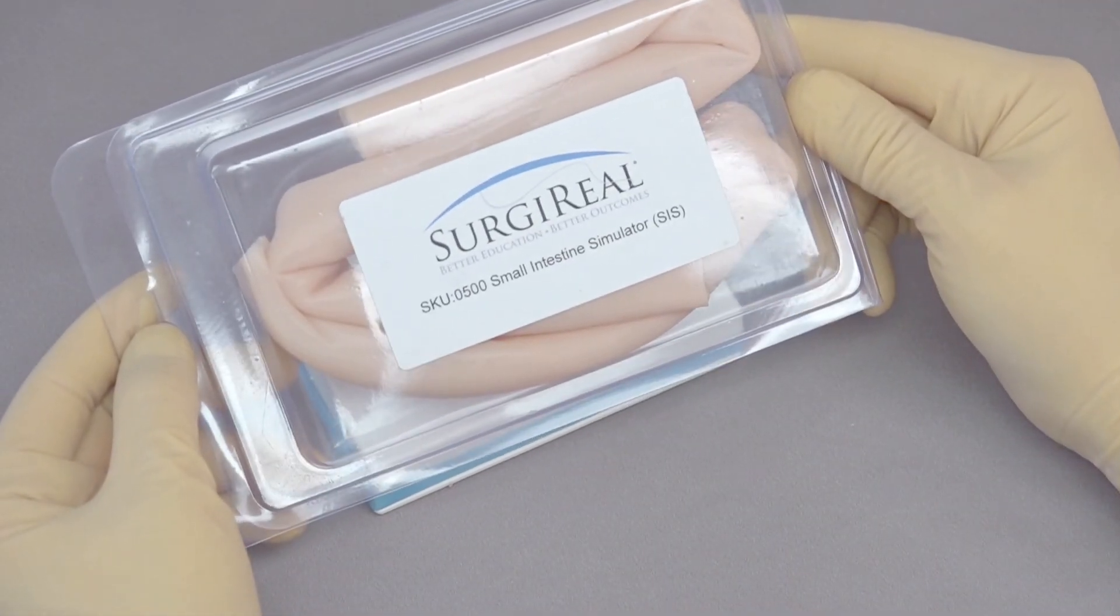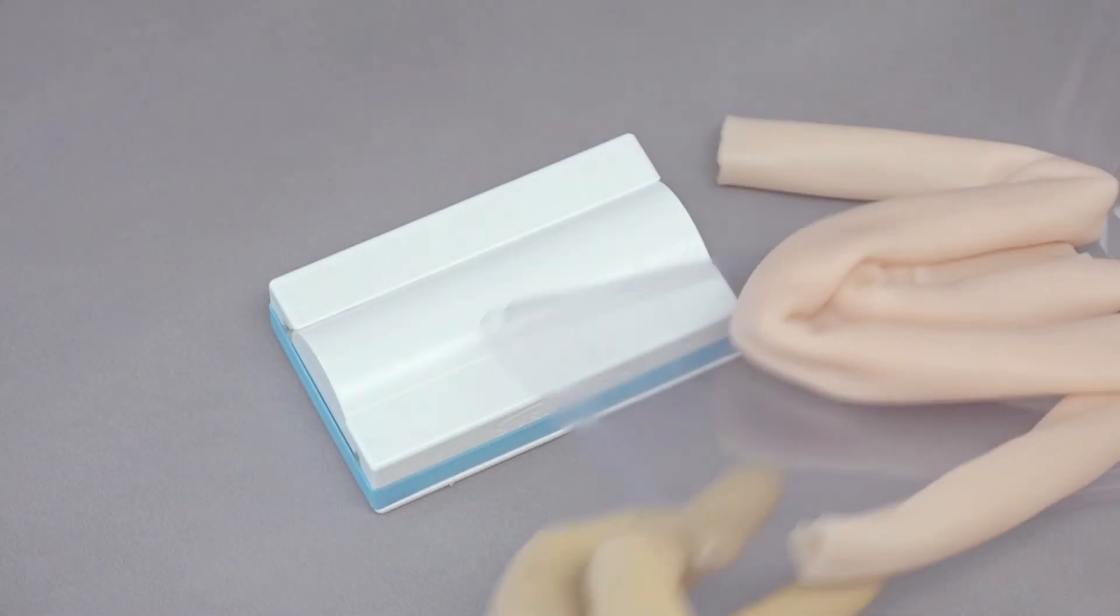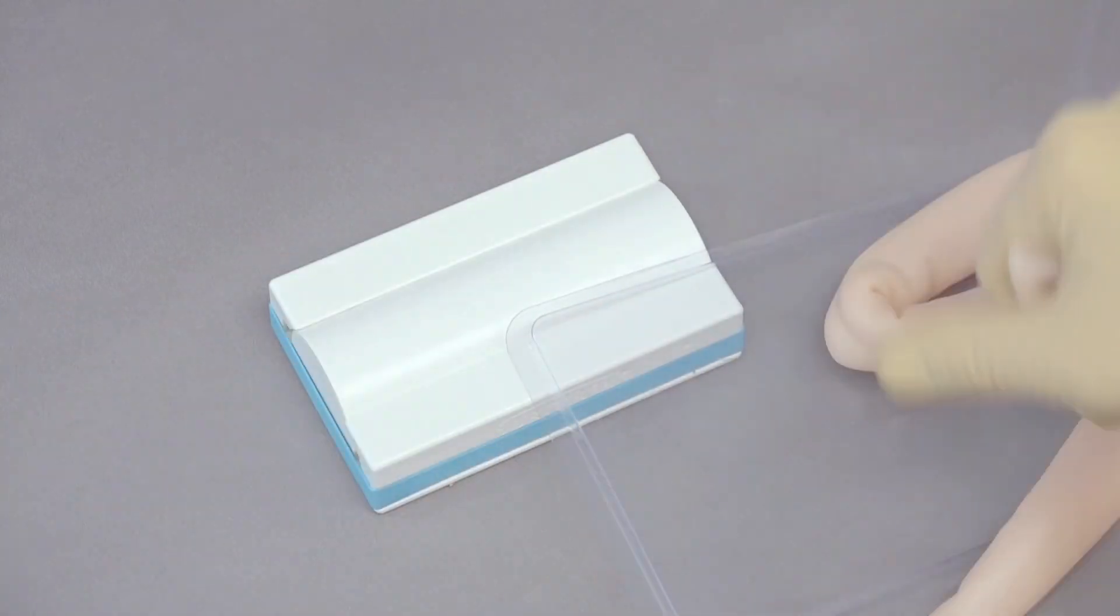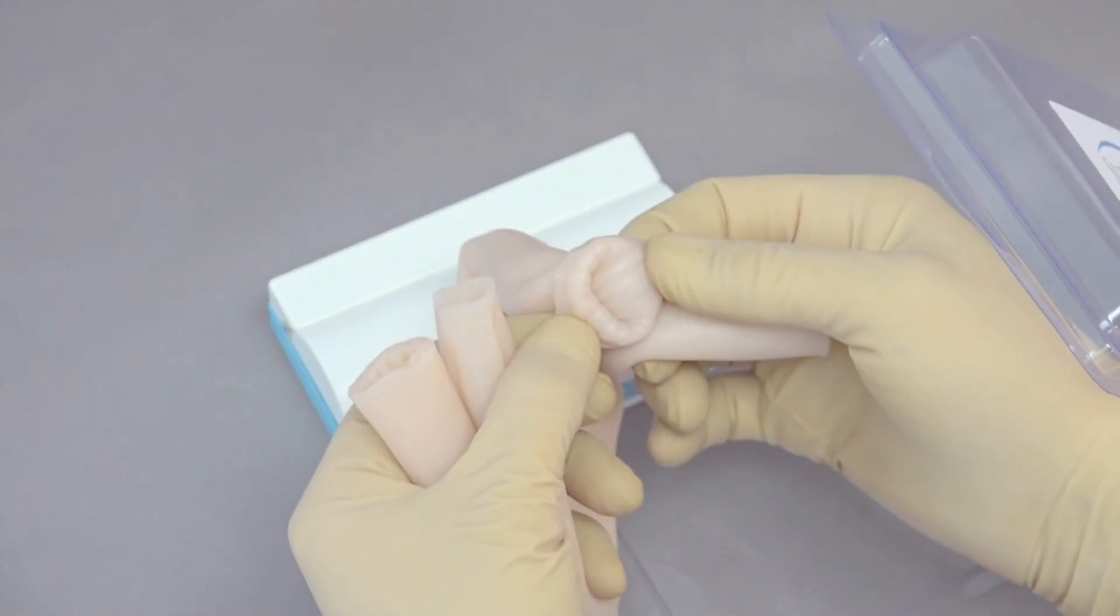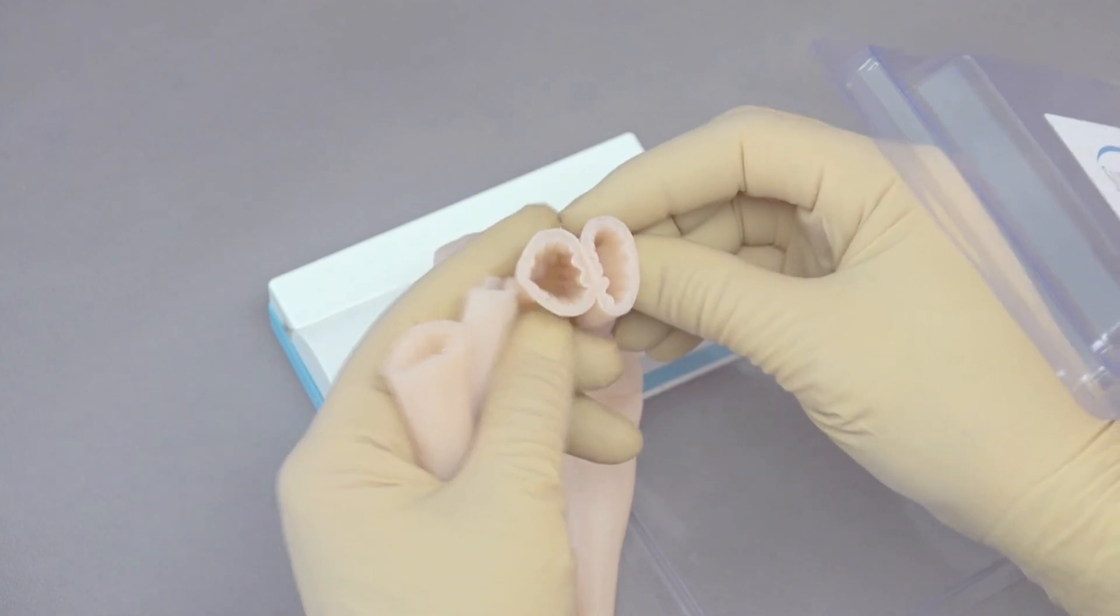We're going to suture using the Surgery Real Small Intestine Simulator. The Small Intestine Simulator comes with a couple of different lengths of intestine, actually they're the same length, that we can use. It has the internal mucosal layers so you get a feel for what that's like and can work very well.